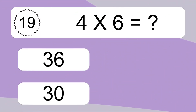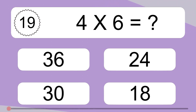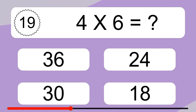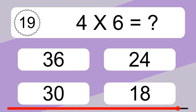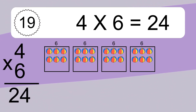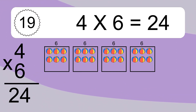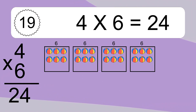4 times 6 equals what? 4 times 6 equals 24. We have 4 boxes, and each box has 6 colorful balls inside. If you count all the balls in all the boxes together, you will have 4 times 6 balls. This equals 24 balls.